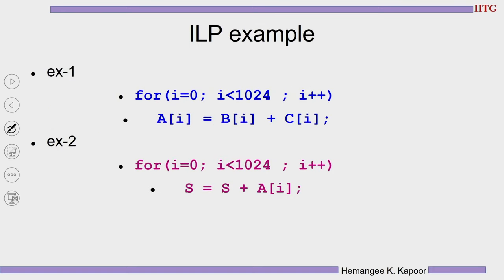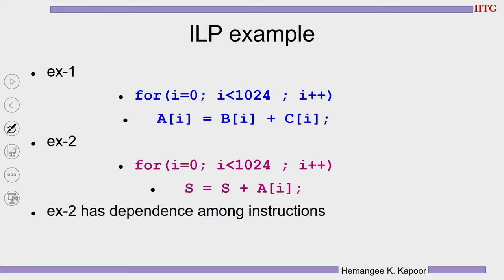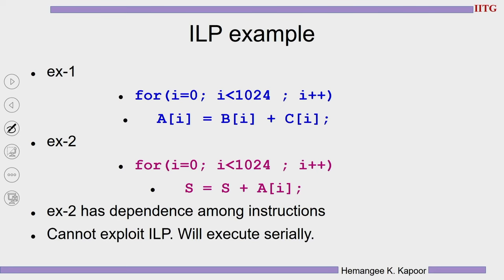The second example is a cumulative sum: for i = 0 to 1024, S = S + A[i]. Here, the value of S in each iteration depends on S from the previous iteration — there is a dependence between instructions. Hence we cannot exploit ILP in this example, and this code will execute serially on any processor.